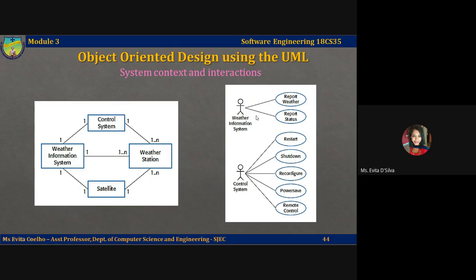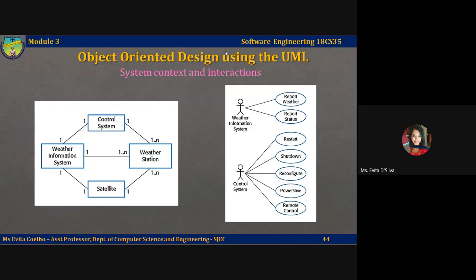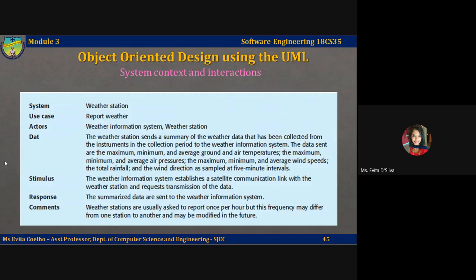A weather information system can report weather or report status. A control system can be restarted, it can be shut down, you can reconfigure, you can go into power save mode, you can remotely control. Each of these use cases must be described in a structured natural language. This helps the designers identify objects in the system and gives them an understanding of what the system intends to do. In this table, I have taken the 'report weather' use case and described it in a structured natural language format.